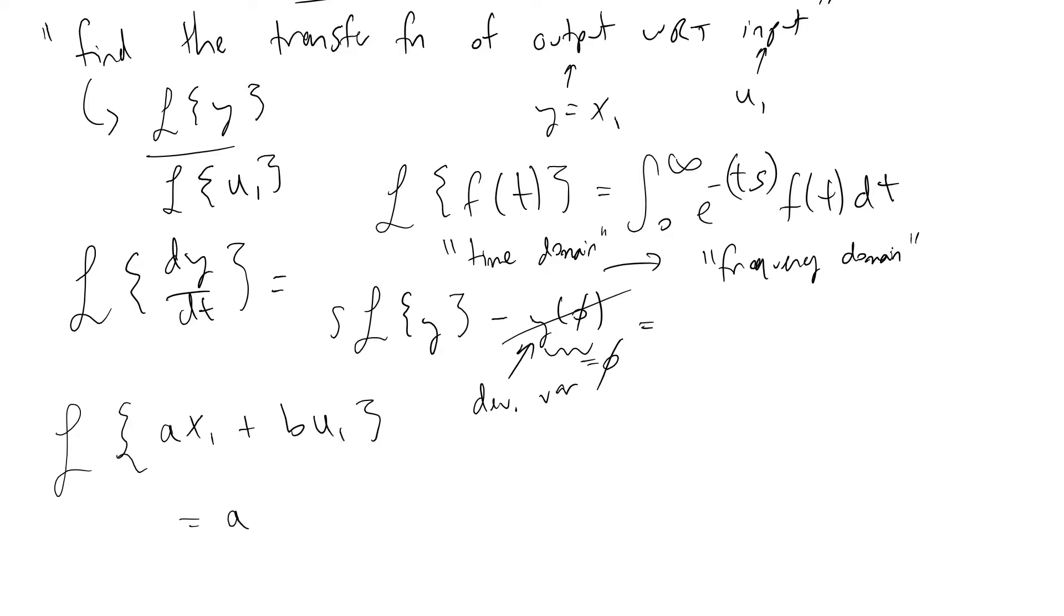It must be equivalent to a times the Laplace transform of x1 plus b times the Laplace transform of u1. And so definition of being linear is we can move these constants out of the equation, as well as add the two terms together later on, like we just did.